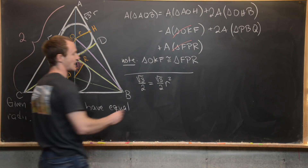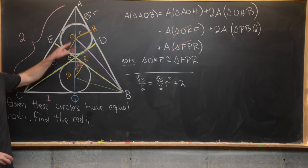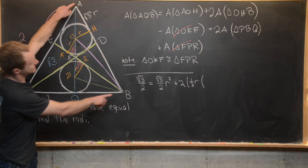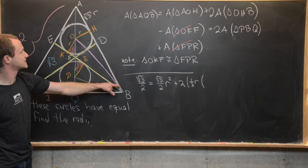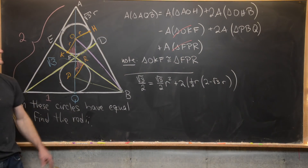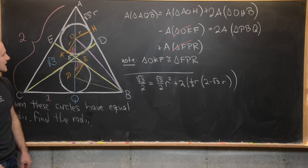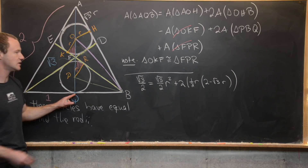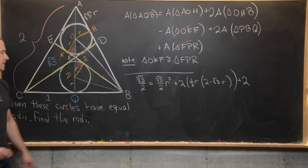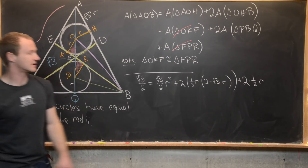Next we'll have plus twice the area of OHB. The altitude is r, and the base is 2 minus square root of 3 times r, so that gives one half times r times (2 minus root 3 times r). Then we've got this triangle PBQ: we know this length is r and this length is 1, so we've got twice one-half times r.